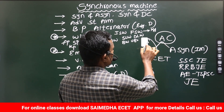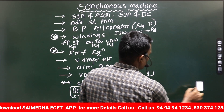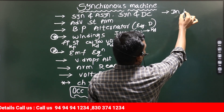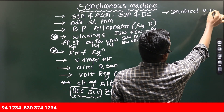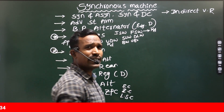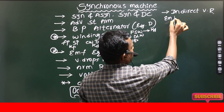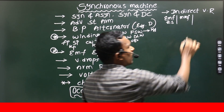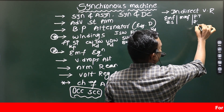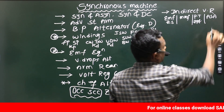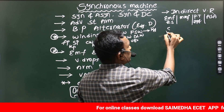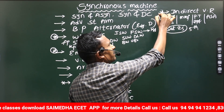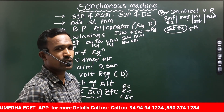Then after, what are the topics we still have in our synchronous machine? After these characteristics, we go to indirect voltage regulation methods. The different types of indirect voltage regulation methods are: EMF method or synchronous impedance method; MMF method or ampere turns method; Portier triangle method or ZPF method; American Standards Association method; and the saturated synchronous impedance method. These are very very very important — 100% they will ask you a question in any competitive exam.